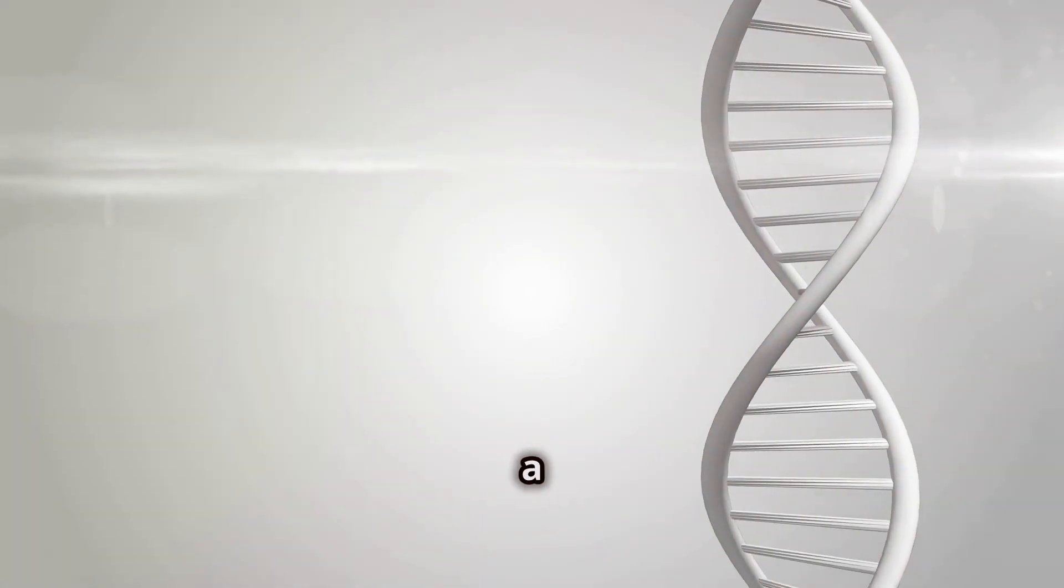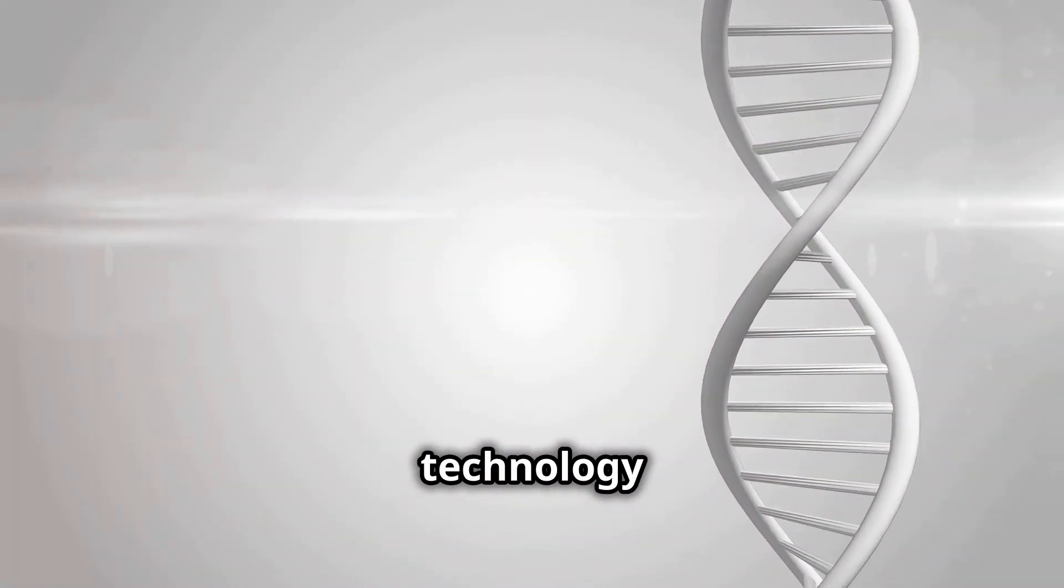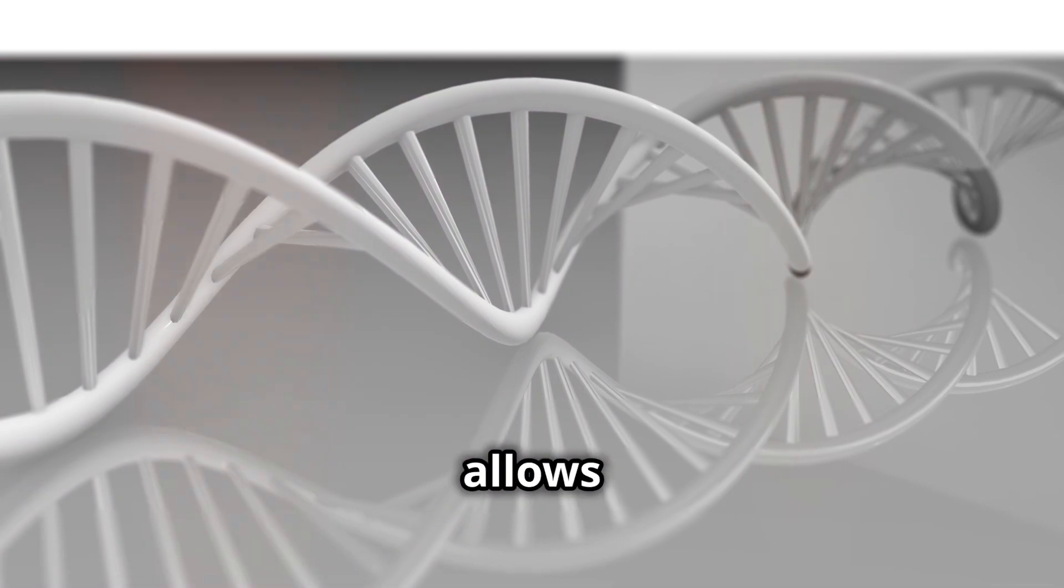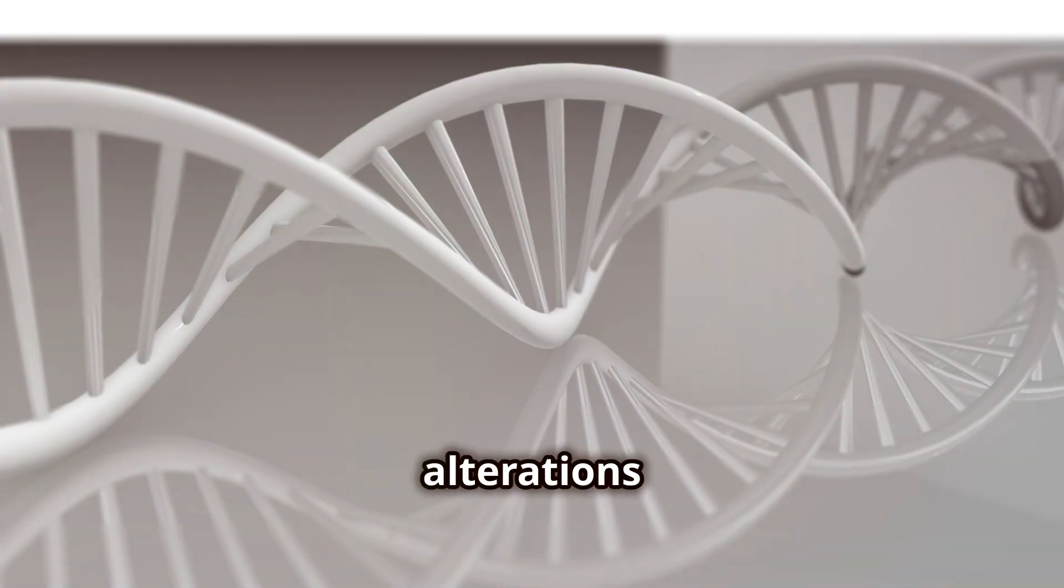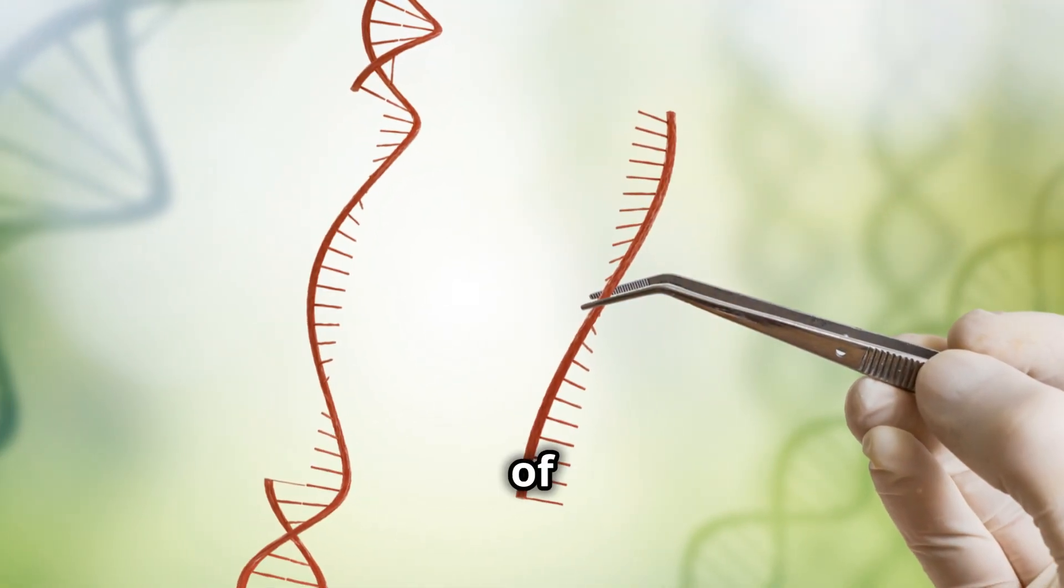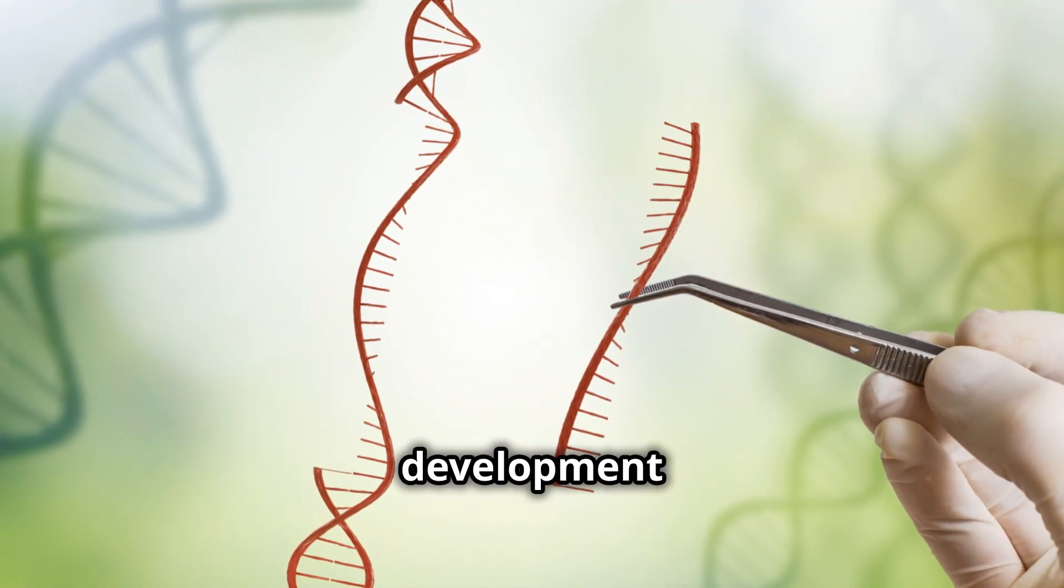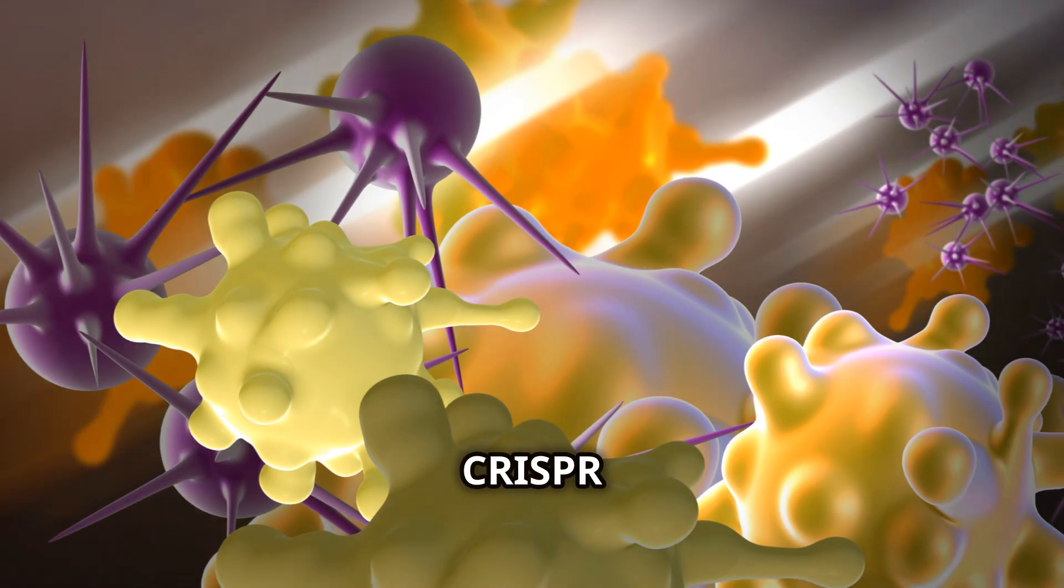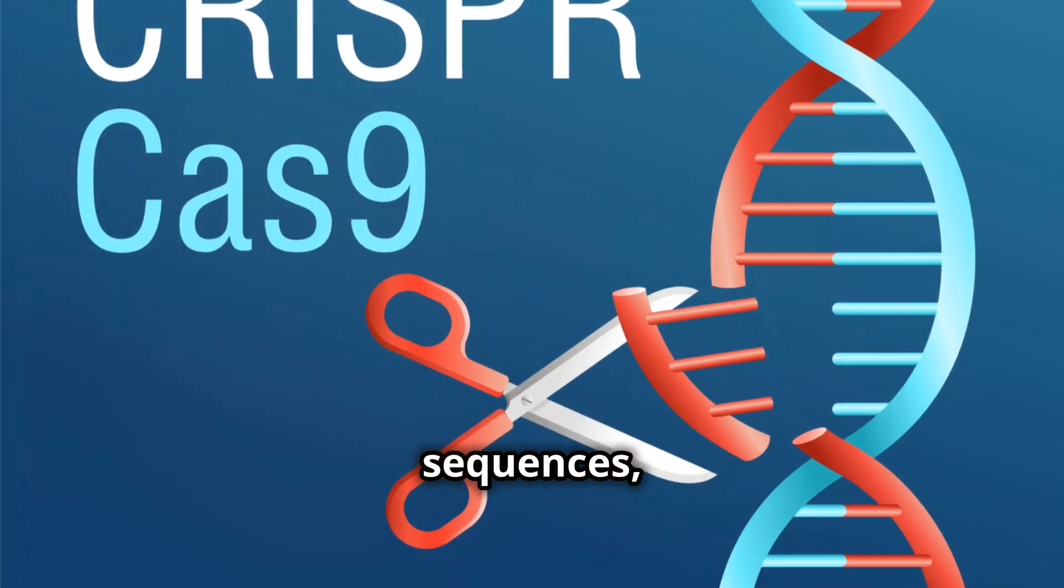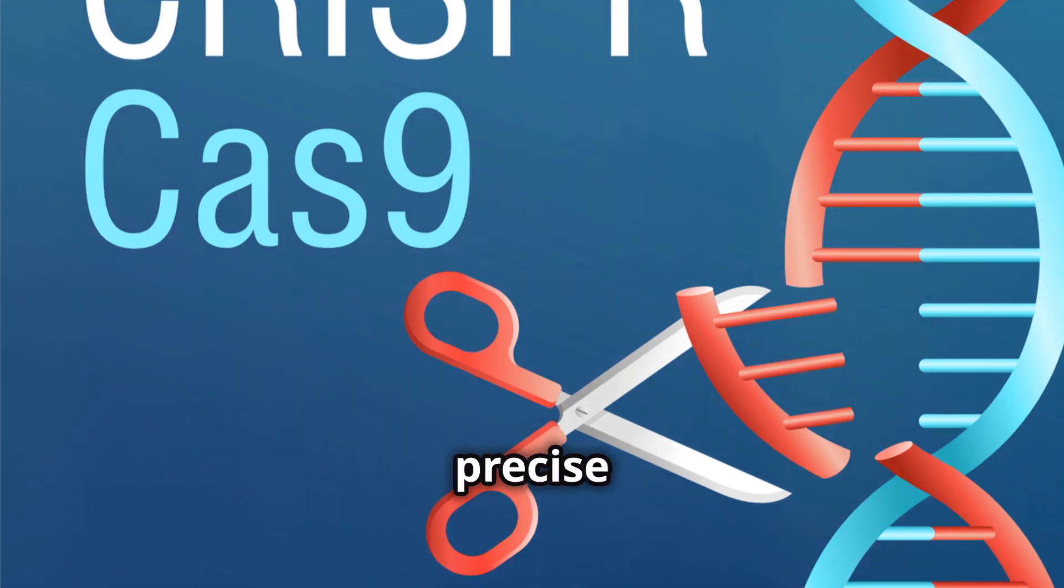CRISPR-Cas9 is a groundbreaking gene editing technology that has revolutionized the field of genetics. This tool allows scientists to make precise alterations to DNA, enabling the correction of genetic defects, the enhancement of crop resistance, and the development of new medical treatments. CRISPR works by using a guide RNA to target specific DNA sequences, where the Cas9 enzyme then makes precise cuts.